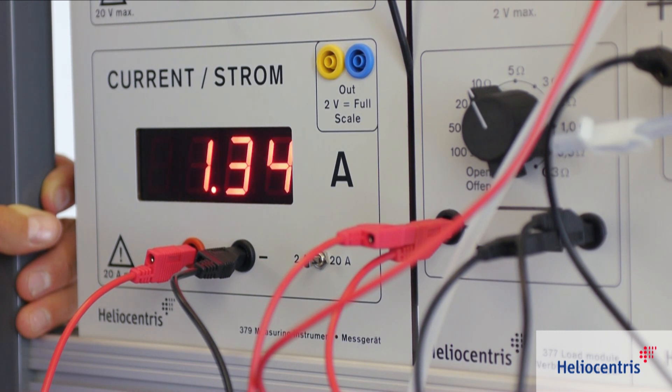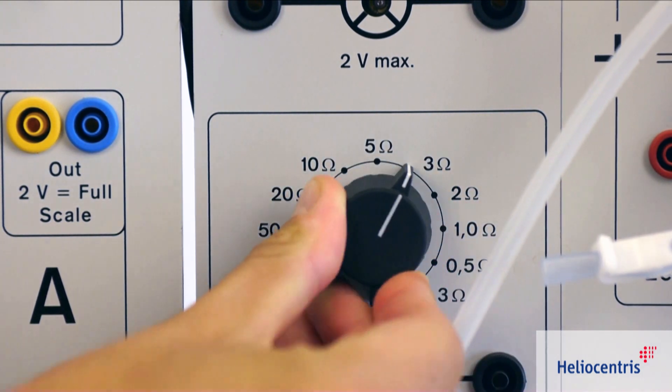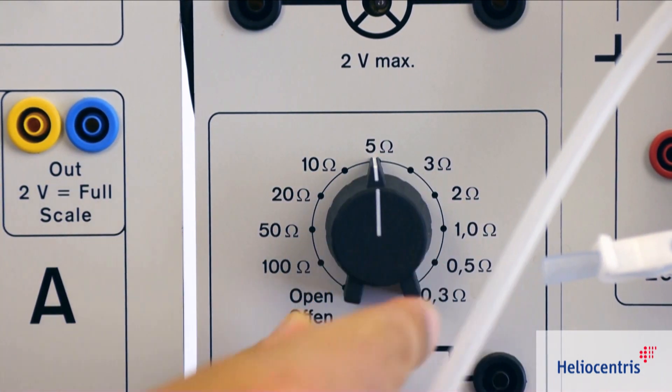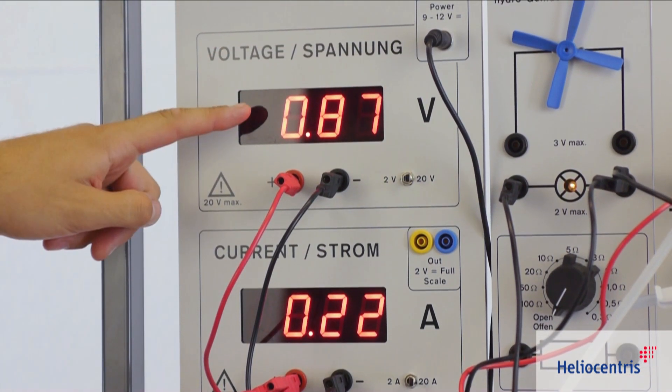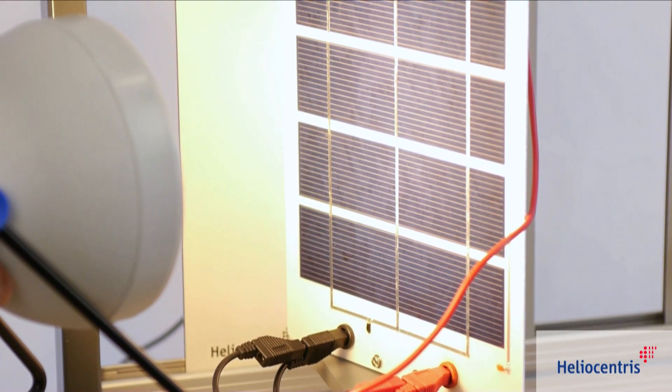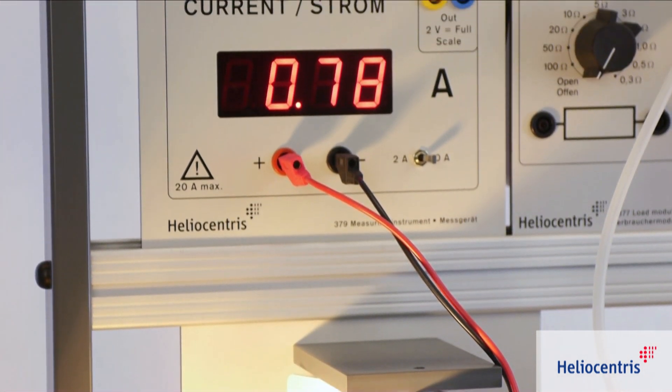The resistors are optimized for measuring the characteristic curves of the solar panel and fuel cell. The measuring unit has two measuring ranges, one for current and one for voltage. The measured values are clearly readable on the large LED displays.